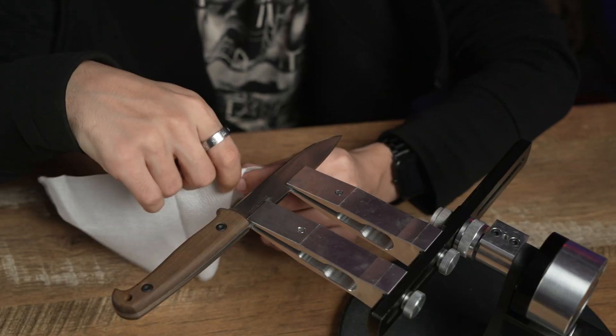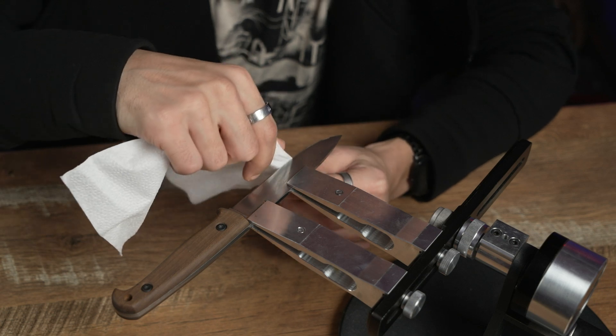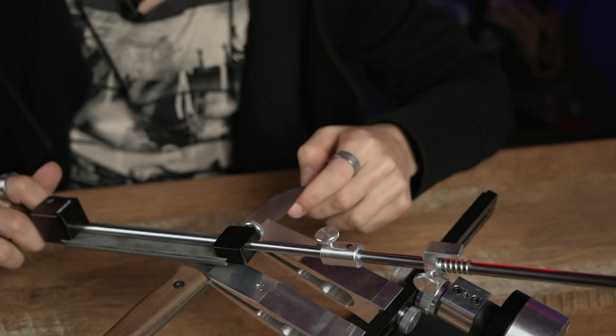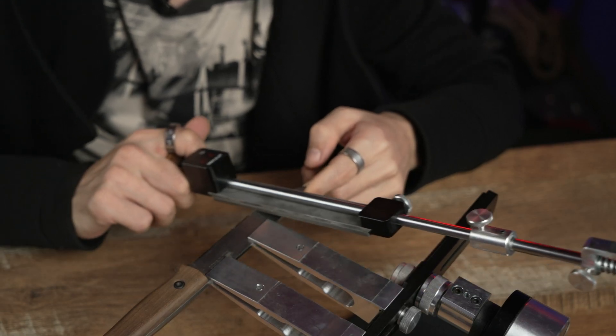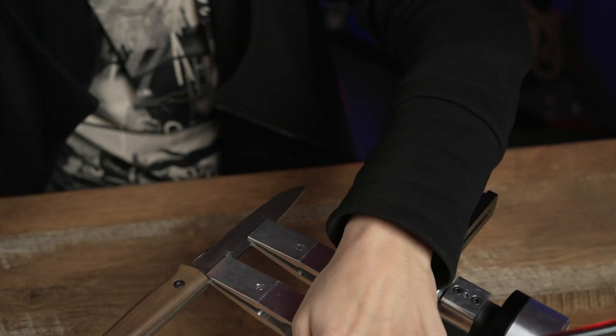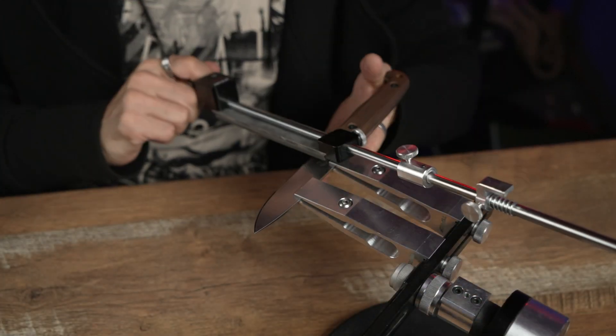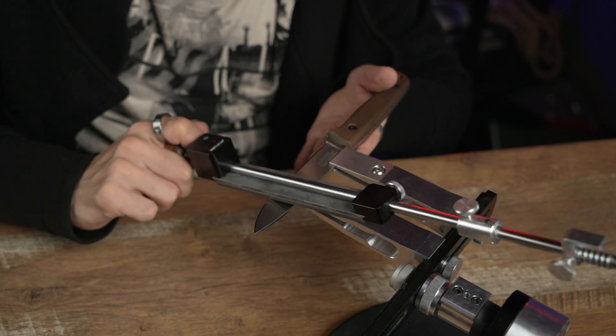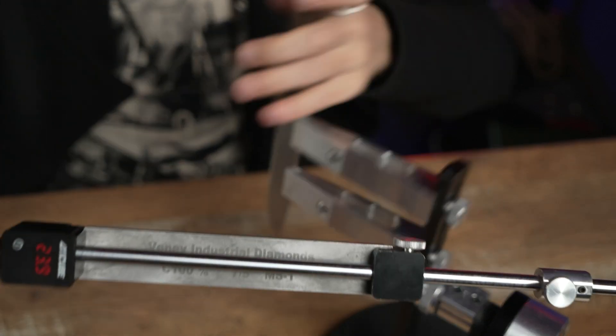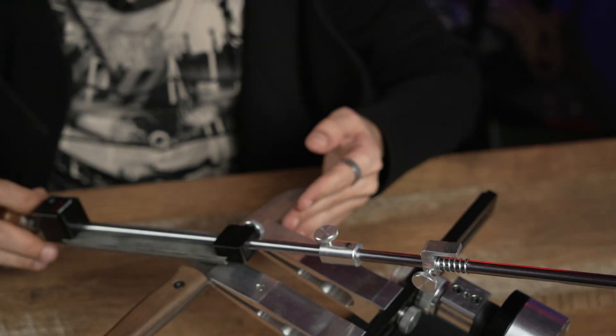It is very important to remove the burr completely from both sides of the cutting edge. To do that, we move the abrasive stone along the cutting edge in a single path per side. This technique allows us to keep the angle and direction of the mark that is left by the abrasive stone along the cutting edge.